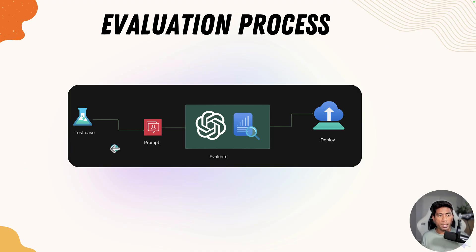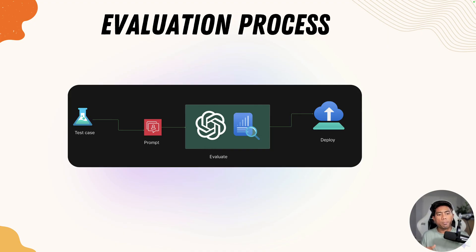This is going to be an iterative process. The first time you write the test case, the answer may not be correct — you'll get a different answer, so you write one more test case or prompt to make sure the evaluation yields the correct result every single time after that. Once you see that the evaluation works as expected for your test cases, you can deploy these prompts and make sure the language model also has all the necessary fine-tuning before it goes to production. That is how the whole evaluation process really happens.